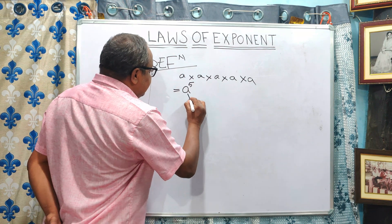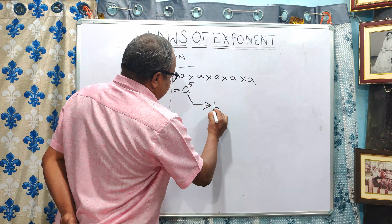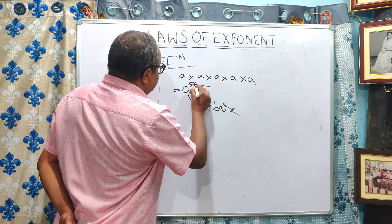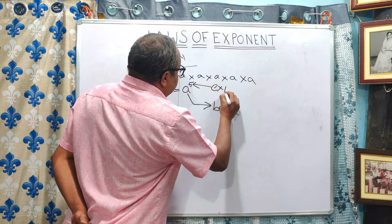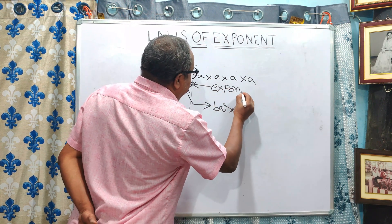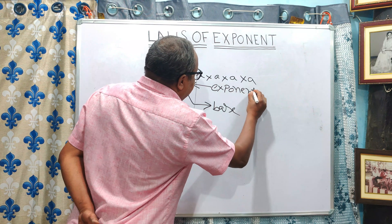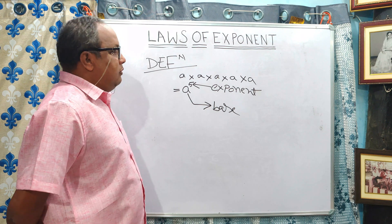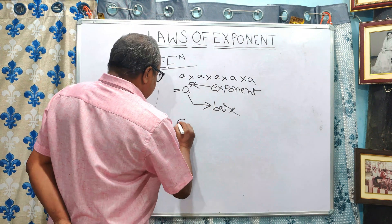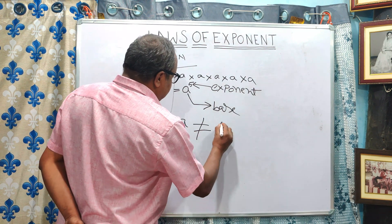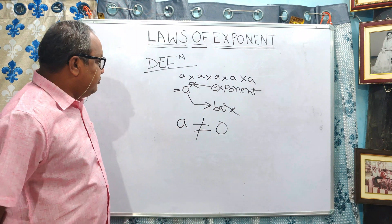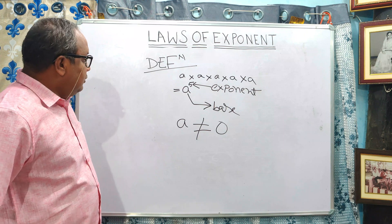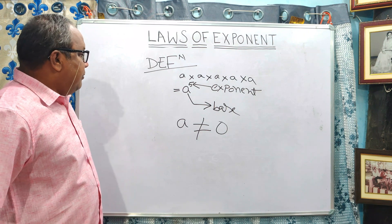Where A is the base and five is the exponent. A should not be zero — A is not equal to zero. This is called the exponent. Now I am going to deliver about the rules.